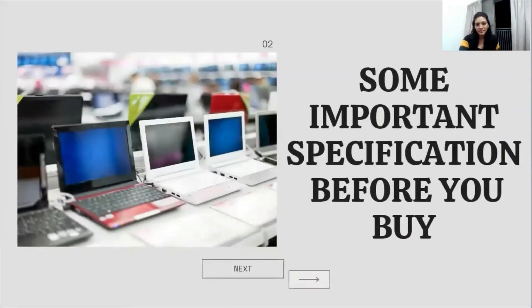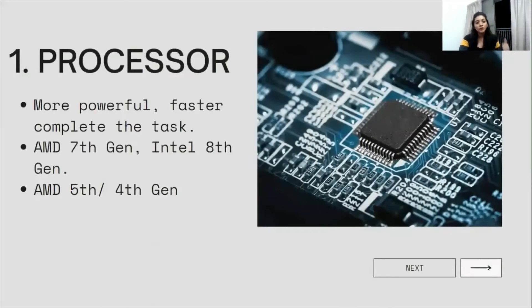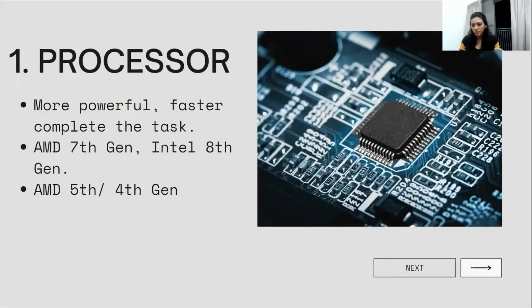These are really important before you buy. Let's go into the first one: the processor. This is a very important part because the more powerful your processor is, the faster it is to complete the task. So here we have AMD and Intel. What is generally suggested is that you get the latest generation because it is really updated and all the modifications are there in that updated processor.